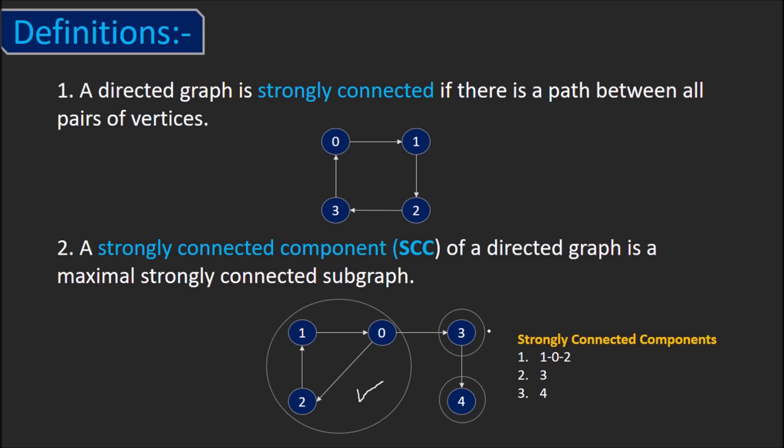But if we look at vertex 3, we can go from 3 to 4 but not from 4 to 3. So, they'll belong to different components. Similarly, there is a path from 0 to 3 but not from 3 to 0. So, again, they belong to different strongly connected components. So, the given graph has 3 SCCs.